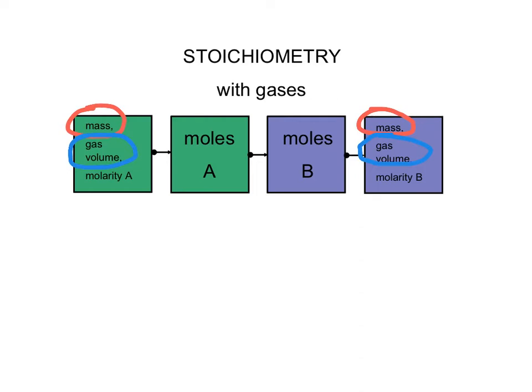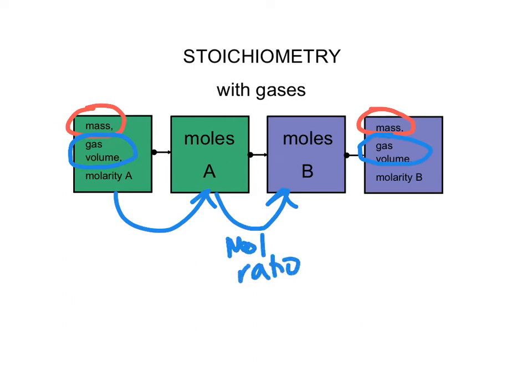We're going to want to convert to moles, as usual, and there are a couple of different things we'll talk about with gas volumes. When we want to switch between substances, we're going to use the mole ratio from the balanced chemical equation — that's where we use our coefficients. We might want to go back to volume at the end, and there'll be a couple of different options for going from moles to volume.